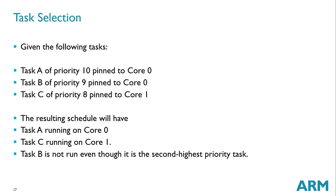Let's look at an example. Say I have three tasks: Task A, Task B, Task C with priorities 10, 9, and 8. In FreeRTOS, the higher the number, the higher the priority — so Task A is highest, Task B is medium, and Task C is lowest. If all three tasks are pinned to cores as shown, Task A will run on Core 0 and Task C will run on Core 1. Even though Task B is second-highest priority, because it's pinned to Core 0, which is already running higher-priority Task A, Task B does not run. This is a key thing to understand when pinning tasks to a core.